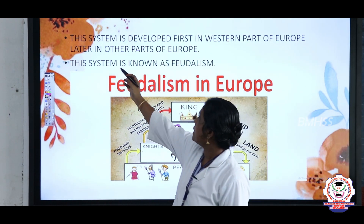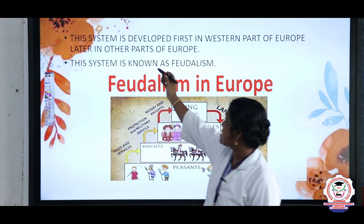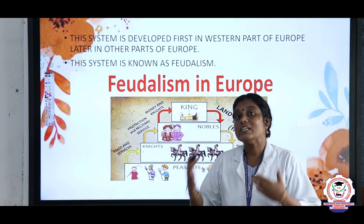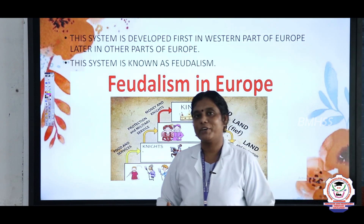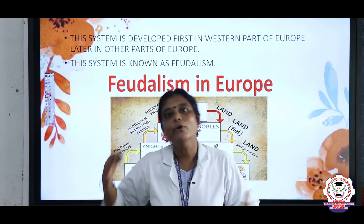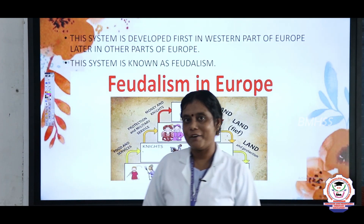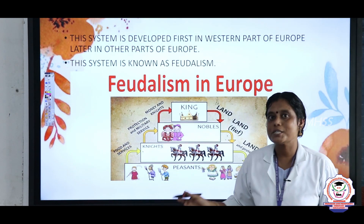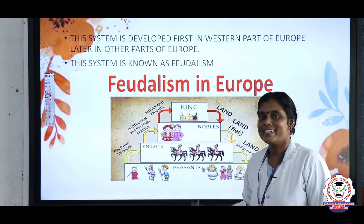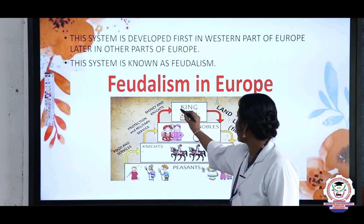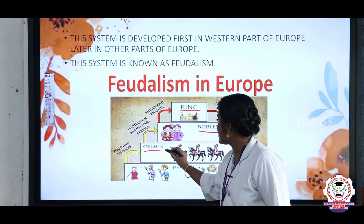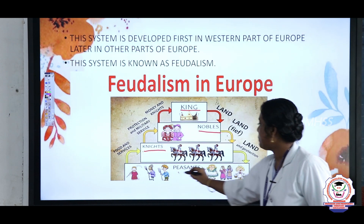This system was developed first in the western part of Europe, and later it spread over to the remaining part of Europe. This is known as feudalism. The hierarchy consists of the king, nobles, knights, and peasants.